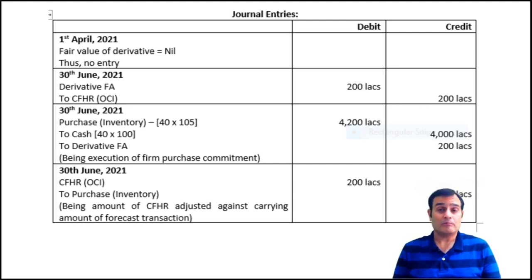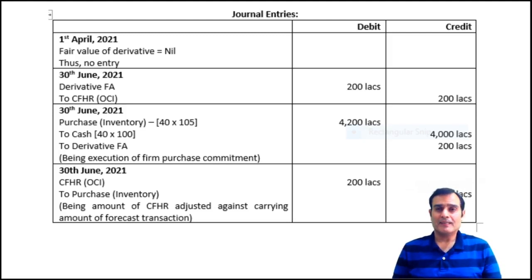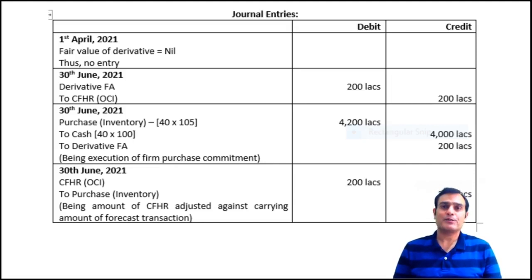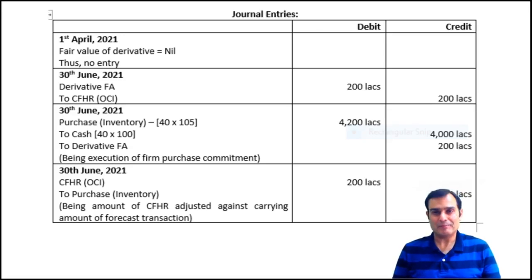So this is, in a very simplified manner, the concept of cash flow hedge reserve. There is much more that can be elaborated on this issue, but there's always scope for more inputs at a later date. We are just left with one simple portion related to hedge accounting — a net investment in foreign operation — for which I'm going to make my last video in the series on hedge accounting. Thank you, take care, and bye-bye.